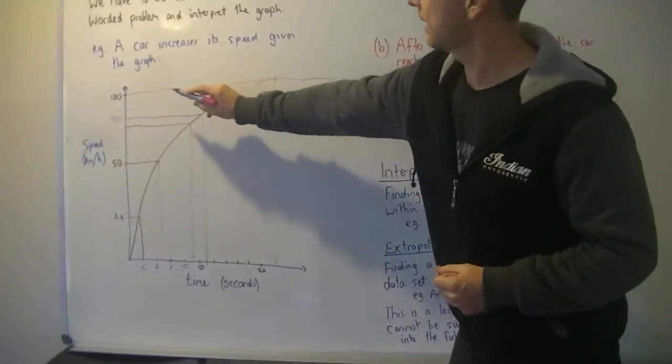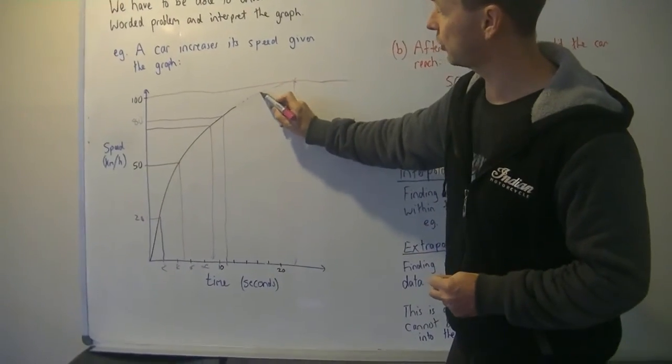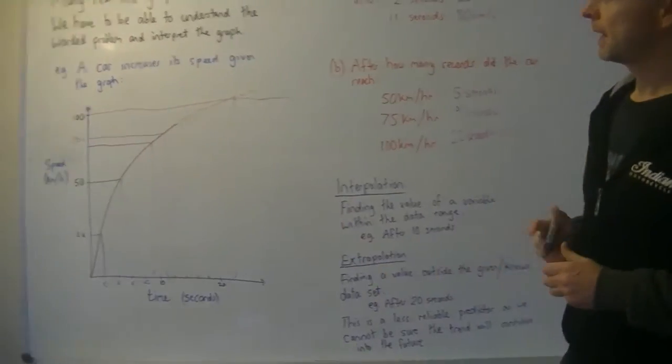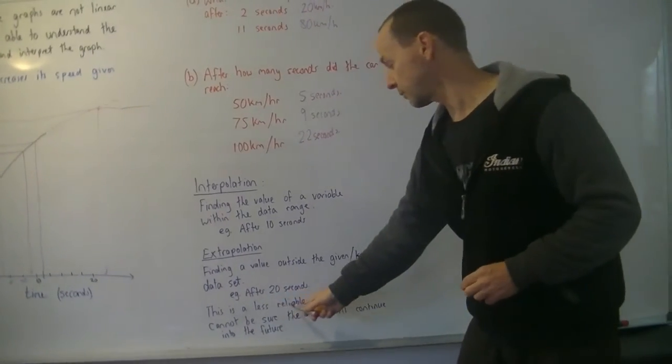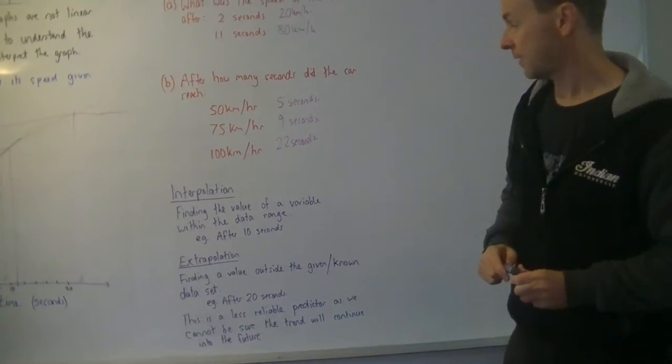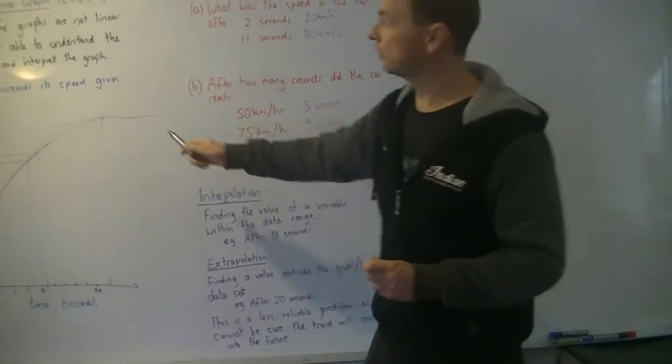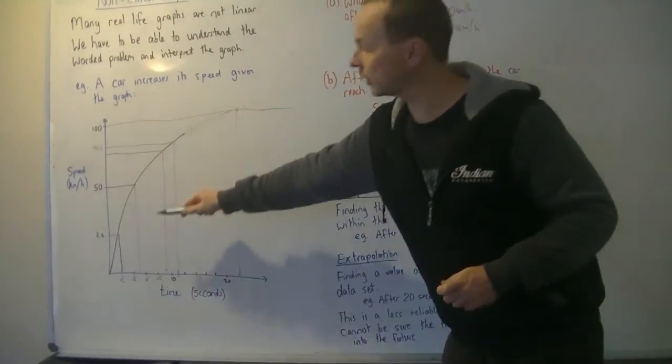Extrapolation is finding a value outside the given or known data set. And that's exactly like this one here. 100 kilometres an hour, we have to predict what's happening. And the reason why this is not as accurate, it's a less reliable predictor as we cannot be sure that the trend will continue into the future. So we don't know.